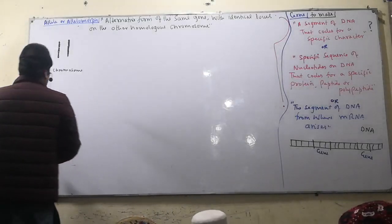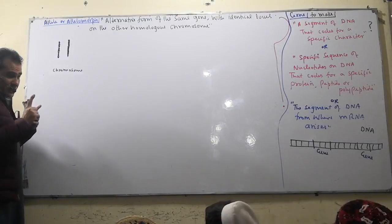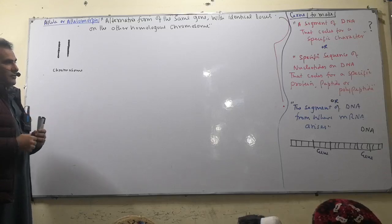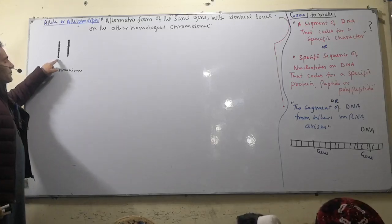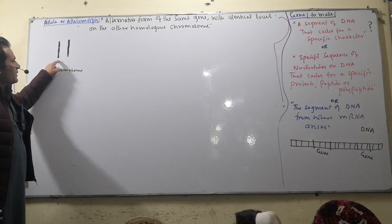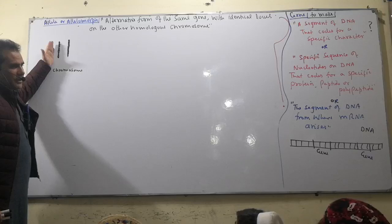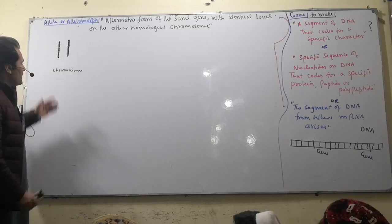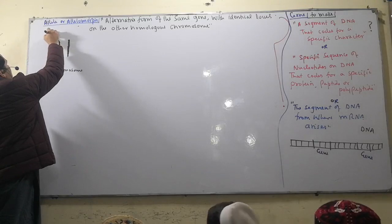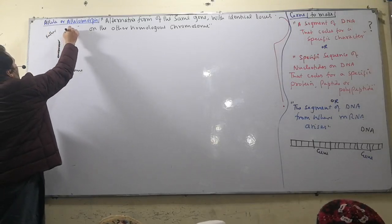The terms used here relate to gene function — attraction is a function. This is a key concept. This leads into the topic of reproduction.